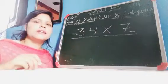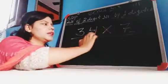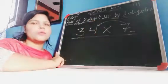34 multiplied by 7. Then firstly, multiply 1st place.